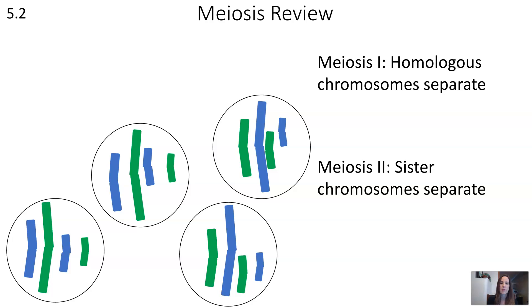If you remember, this organism started with eight chromosomes. So in the resulting gametes we have half the genetic information. Another way of saying that is the original organism is diploid and these gametes are haploid — they have half the genetic information.